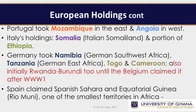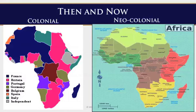Spain claimed Spanish Sahara and Equatorial Guinea, one of the smallest territories in Africa. You will see on the slides what Africa looked like after the partitioning of the continent between 1884 and 1885, and then to the right, you see what Africa looks like now after all the countries have gained independence.